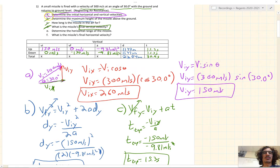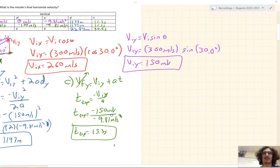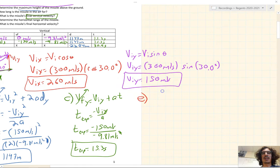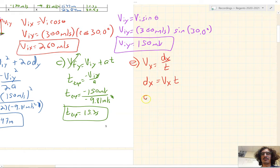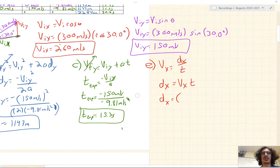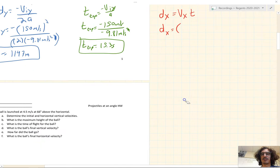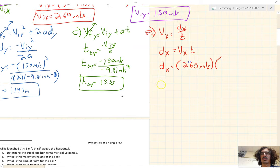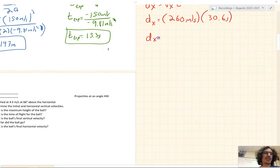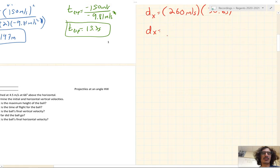Letter E, determine the horizontal range of the missile. The horizontal range, that's in the horizontal direction. The one formula we know horizontally is V sub X equals D sub X over T. We'll multiply both sides by the time to get the distance by itself. So D sub X is VX times T. We'll plug in our initial horizontal velocity, 260 meters per second, and the time, the total time, which is 30.6 seconds. Plug and chug. We get a horizontal distance of 7,956 meters.